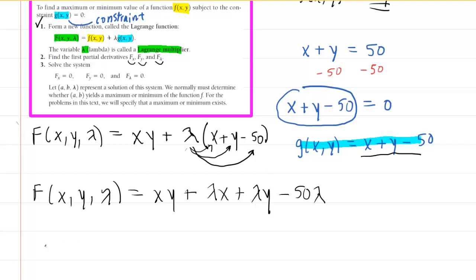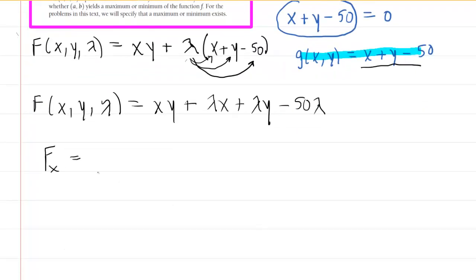Now we are set to find the partial derivatives. Let's begin with the partial derivative with respect to x. When you take the partial derivative with respect to x, you have to treat x as the variable, but then the y and lambda are going to be constants. The partial derivative of xy with respect to x would simply be y. And then the partial derivative of this term with respect to x would be lambda. The derivative of this term would be 0 because both lambda and y are constants, and same thing over here, the 50 lambda is also a constant. So here is our capital F with respect to x. It's just y plus lambda.